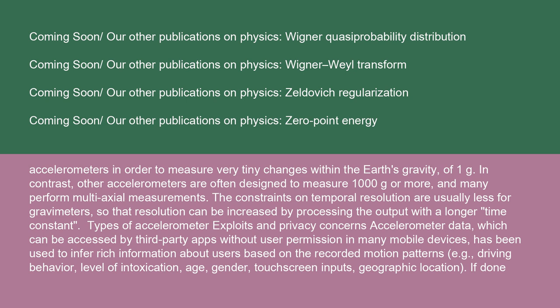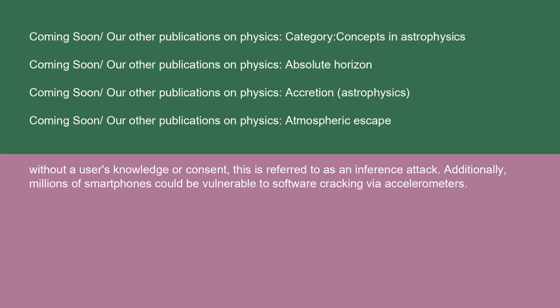Accelerometer data, which can be accessed by third-party apps without user permission in many mobile devices, has been used to infer rich information about users based on recorded motion patterns — for example, driving behavior, level of intoxication, age, gender, touchscreen inputs, and geographic location. If done without a user's knowledge or consent, this is referred to as an inference attack. Additionally, millions of smartphones could be vulnerable to software cracking via accelerometers.